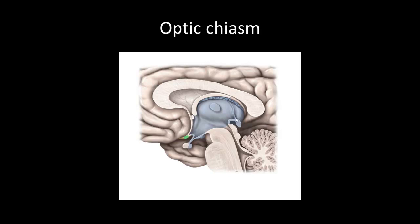Last in the diencephalon, we have the optic chiasm, which is where our optic nerves are crossing. Also, if you have a prolactinoma or any kind of pituitary swelling, it will push on the caudal side of the optic chiasm and can give you bilateral hemianopsia, which you'll learn about in lecture.